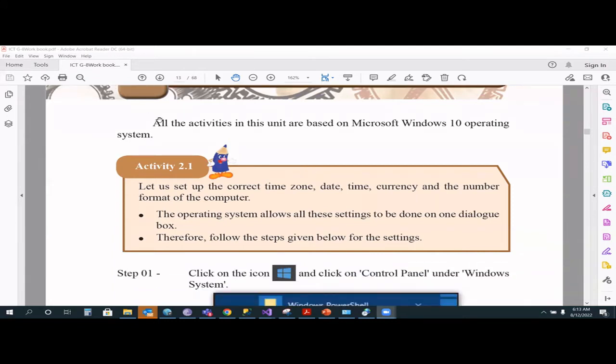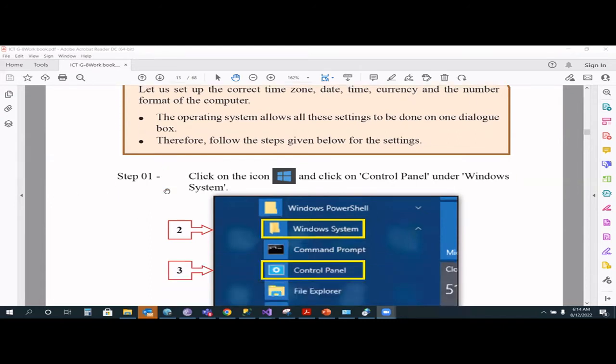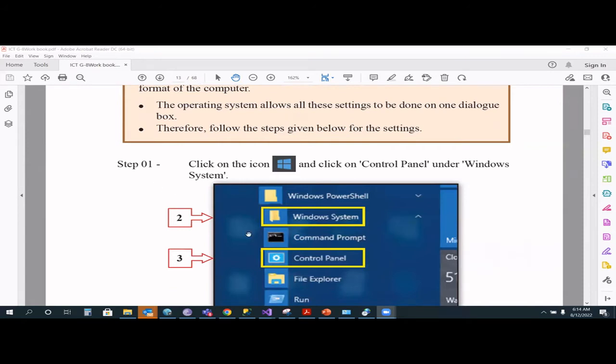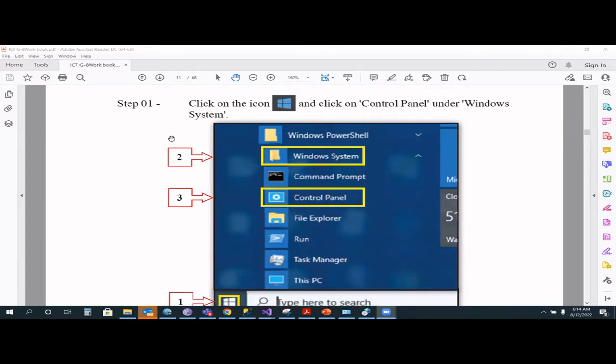Please look into that and then you try these activities by yourself and then come back and watch this video because don't just copy the answers from this video because that's not going to help you in any way. So let's start with the chapter. Chapter 2 of grade 8, configuring and formatting a computer. In this one, they have actually given you some practical activities how to do these things. All activities in this unit are based on Microsoft Windows 10 operating system.